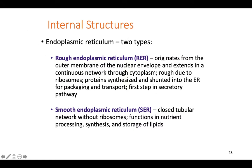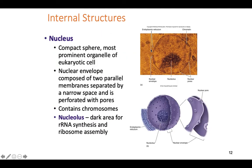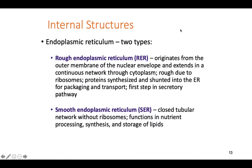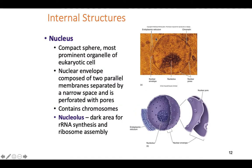Ribosomes are sometimes found bound to something called the endoplasmic reticulum. The endoplasmic reticulum is an extension of the nuclear membrane — it comes up from the nuclear membrane and is just a bunch of folding of that membrane back and forth upon itself. Why is it all folded? It's folded to occupy less space while providing significantly more surface area, so ribosomes can bind and transcribe proteins.